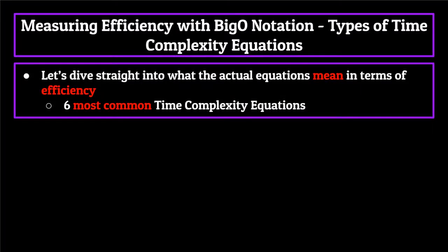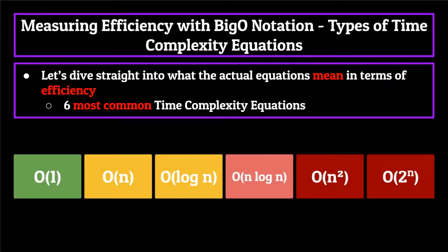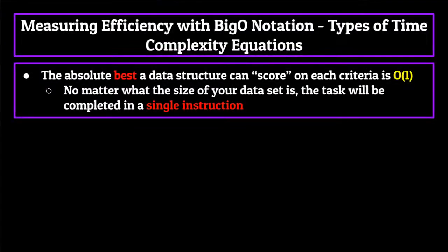Now that we know a little bit about how we measure the efficiency of a data structure using time complexity equations, along with the four criteria actually used to measure them, let's dive straight into what the actual equations mean in terms of efficiency. That way, when we start grading data structures, you'll have a good idea as to how good or bad each one is at a particular metric. We're going to cover the six most common time complexity equations from most efficient to least efficient. The absolute best that a data structure can score is a time complexity equation of O(1).